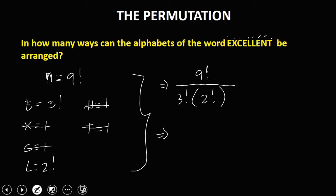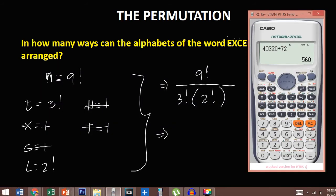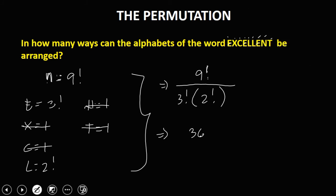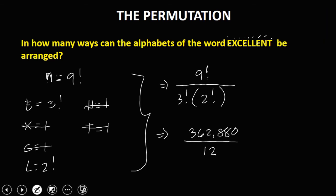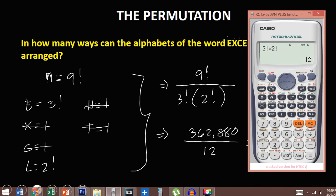To simplify, 9 factorial is 362,880. Then divide by 3 factorial times 2 factorial, which is 12. So 362,880 divided by 12 gives us 30,240. Therefore, there are 30,240 ways.